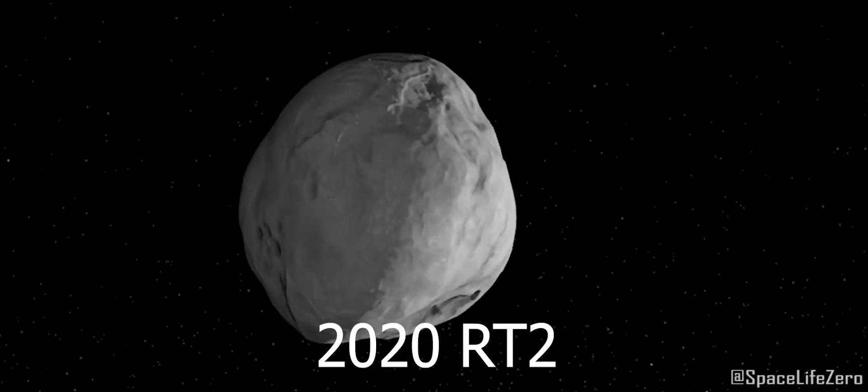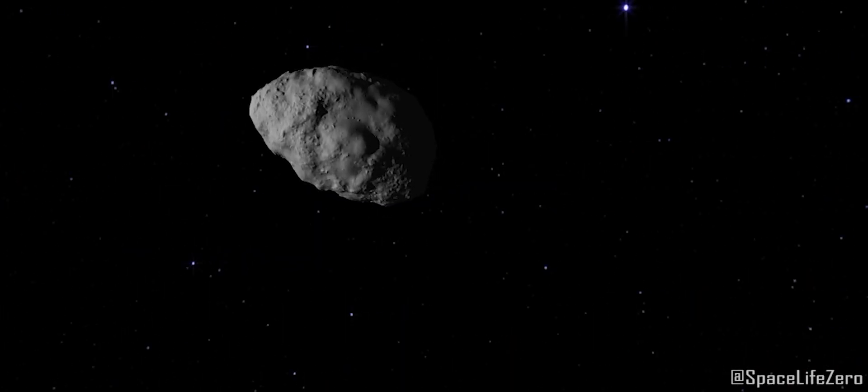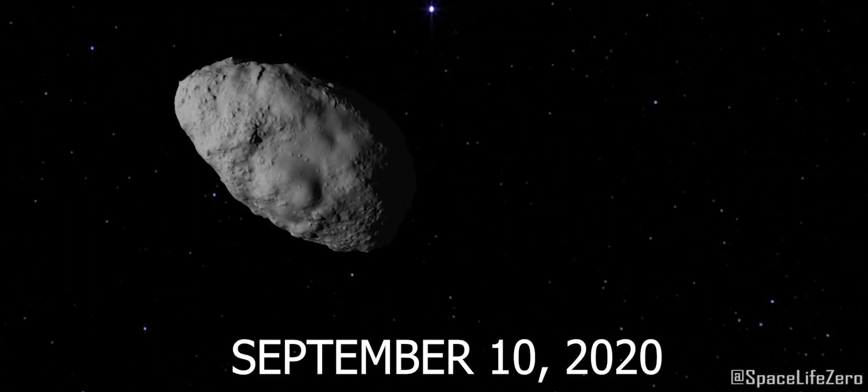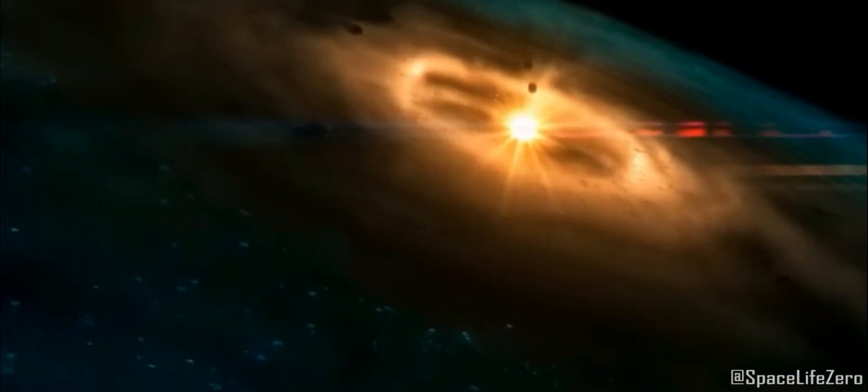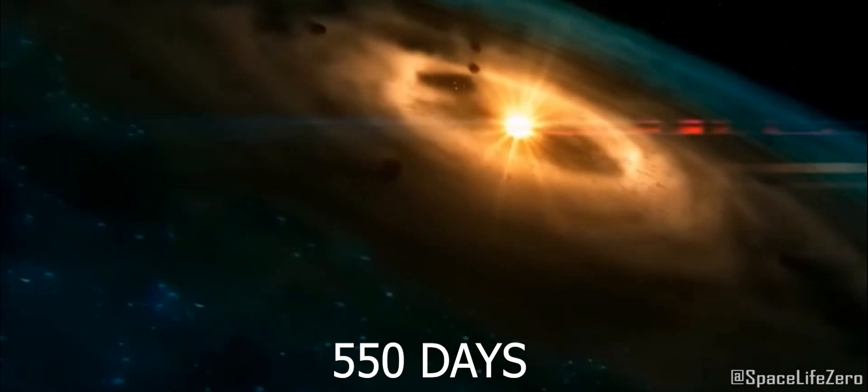Asteroid 2020 RT2. It was first discovered on September 10, 2020, and it belongs to the Apollo Group. It makes one orbit around the Sun in 550 days.